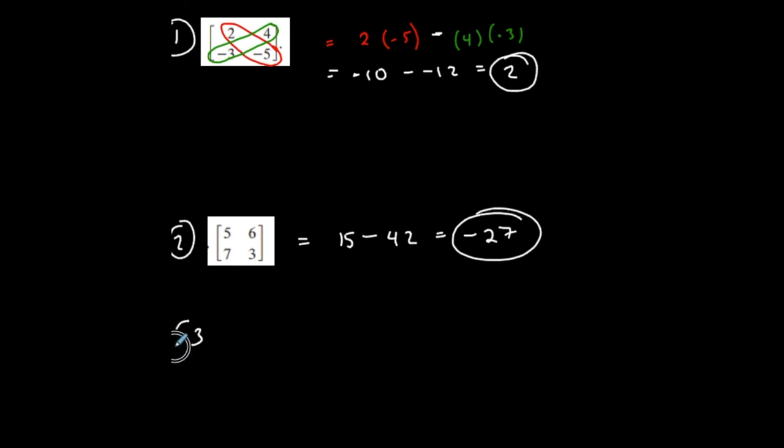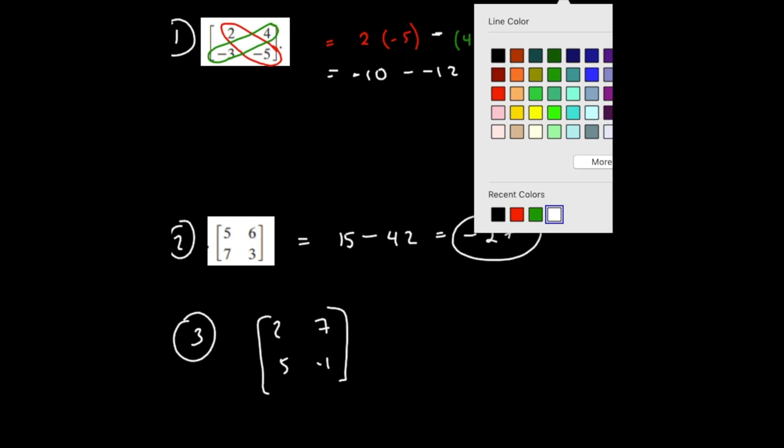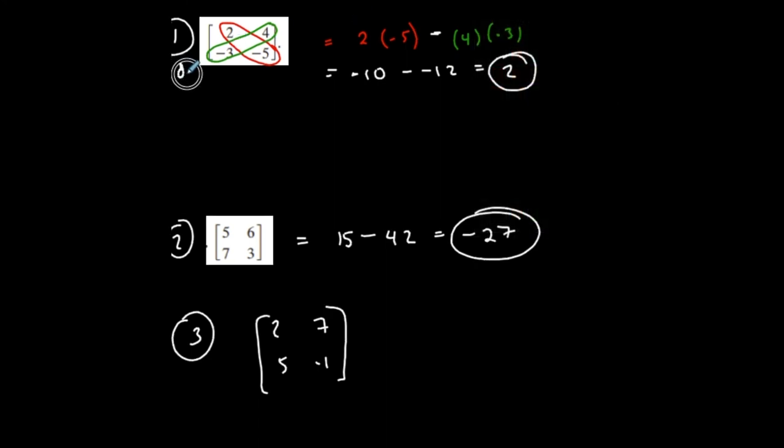Let me do one more. I'll just make it up. 2, 7, 5, negative 1, one more. And actually, I should be writing this because they didn't have this in the book. Determinant of the following matrix. And I'm going to actually write it in its proper form to indicate determinant. Finding the determinant. Having this says find the determinant.